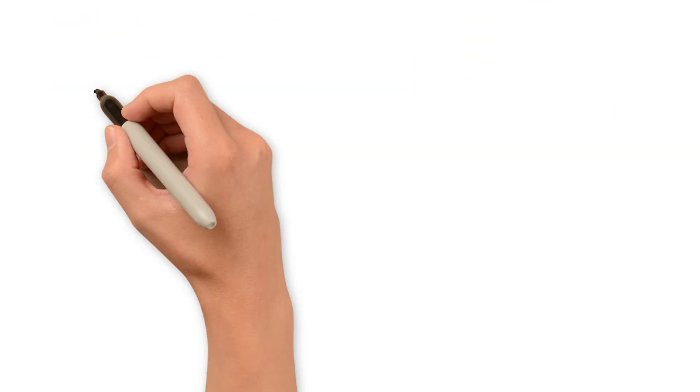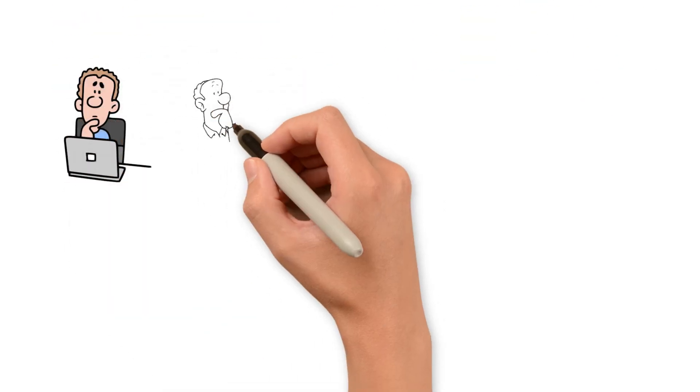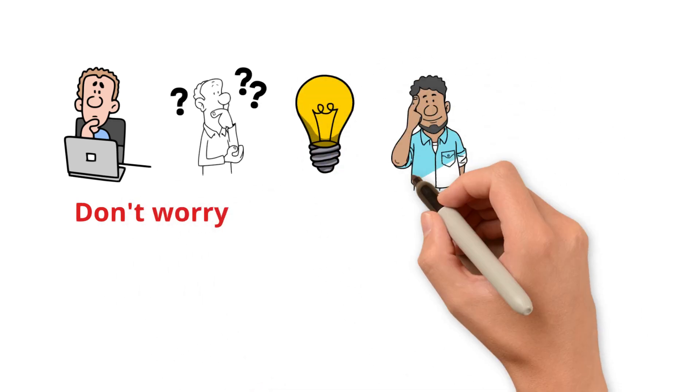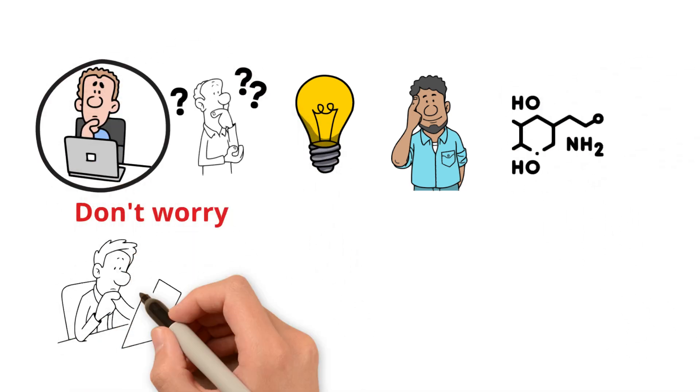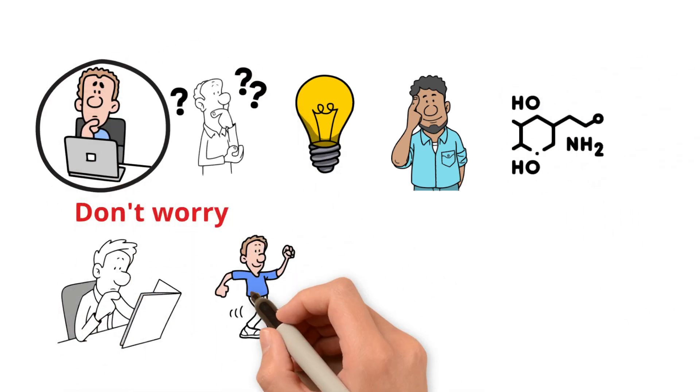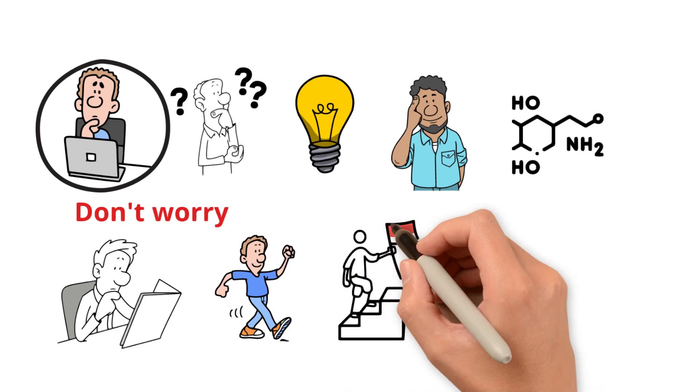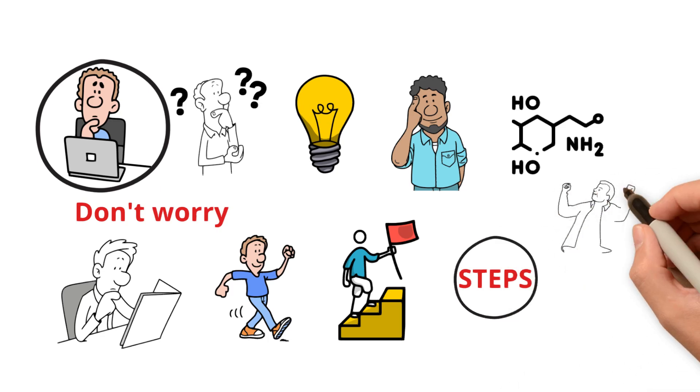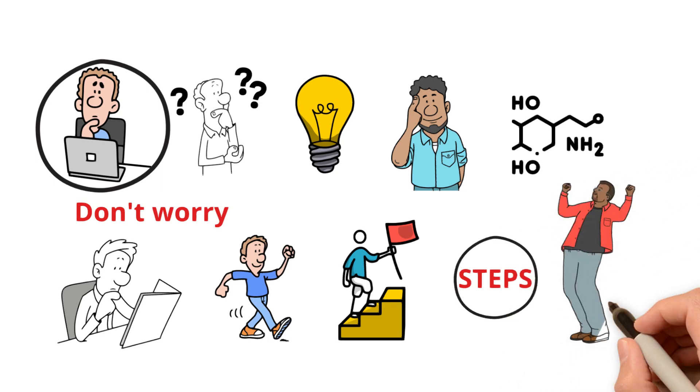Now, you might be thinking, okay, I get it. Dopamine is messing with me, but how do I fix it? Don't worry. We're getting to the good stuff soon. But here's a quick hint. It starts with awareness. Once you realize how dopamine is controlling you, you can start to regain control. But this is going to take work. And trust me, the results are worth it. Stick around, because I'm about to share with you the exact steps you need to take to detox your brain from dopamine overload. And I promise, your life will change. Ready to break free?